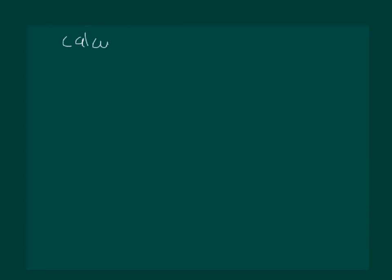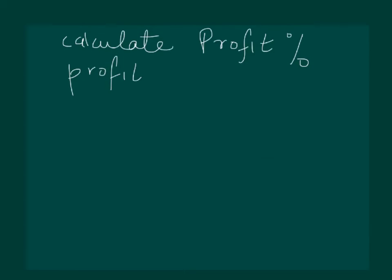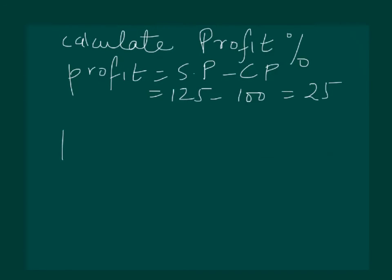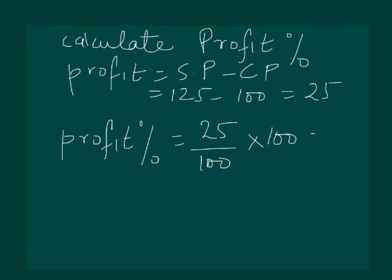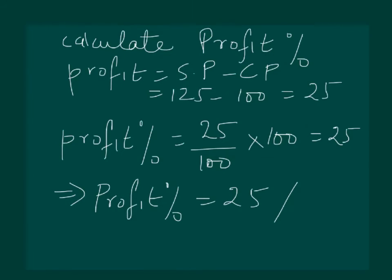Let us consider our same pencil example and try to calculate profit percentage. We had calculated profit to be selling price minus cost price, equal to 25 rupees. Now to calculate profit percentage, we substitute the values: profit is 25 rupees, cost price was 100 rupees, multiplied by 100. The result comes out to be 25%. That means in terms of percentage we have made a profit of 25%.